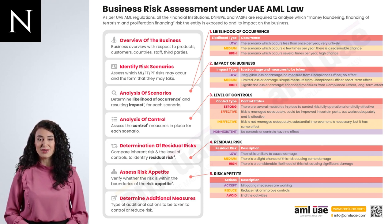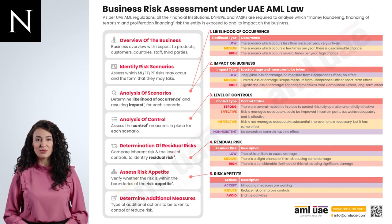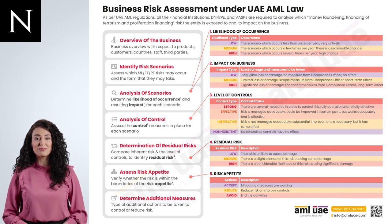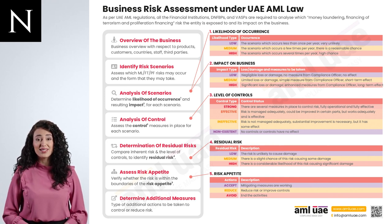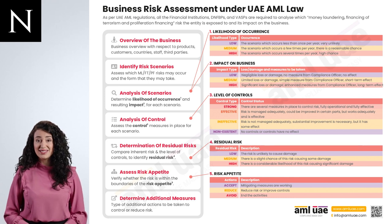AML Business Risk Assessment should be conducted with the utmost diligence, adopting a risk-based approach to ensure that adequate resources are deployed optimally to mitigate the risk. This should be aligned with the nature and size of the business. Moreover, before performing the business risk assessment, the company should document its ML/TF risk appetite — that is, to what extent the company can tolerate ML/TF risks without impacting the business.